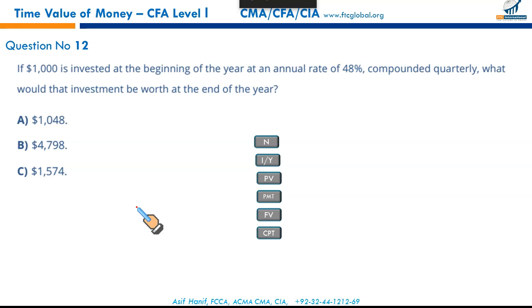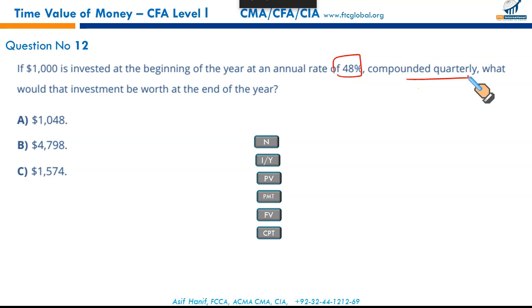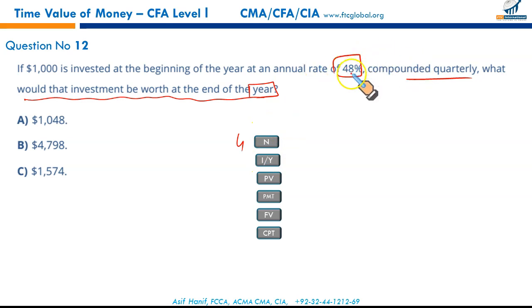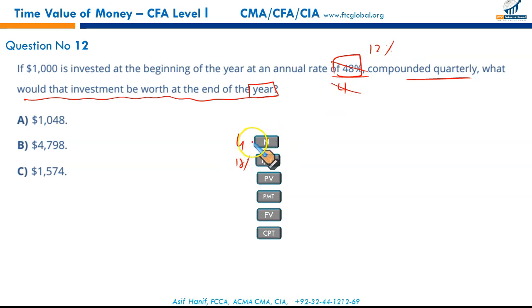If $1,000 is invested at the beginning of the year at 48% annual rate compounded quarterly, what is it worth at year end? Quarterly compounding over one year means N = 4. Annual rate 48% ÷ 4 = 12% per quarter. PV = -$1,000, PMT = 0 — compute FV. Punch it in and the result is C.